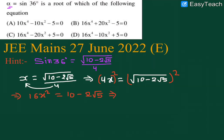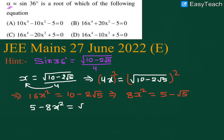But before squaring, divide throughout by 2. We will get 8x² is equal to 5 − √5.